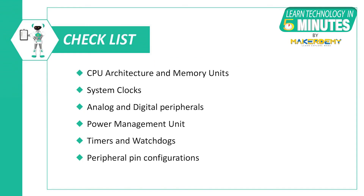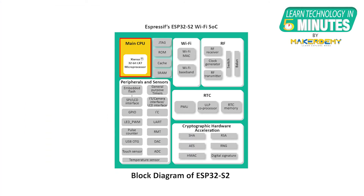Moving on to the functional description part of the data sheet, this part covers the functions of the ESP32-S2 such as CPU architecture and memory units, system clocks, analog and digital peripherals, details of the power management unit, timers, watchdogs, and peripheral pin configurations. The ESP32-S2 family makes use of a low-power Xtensa 32-bit LX7 microprocessor.